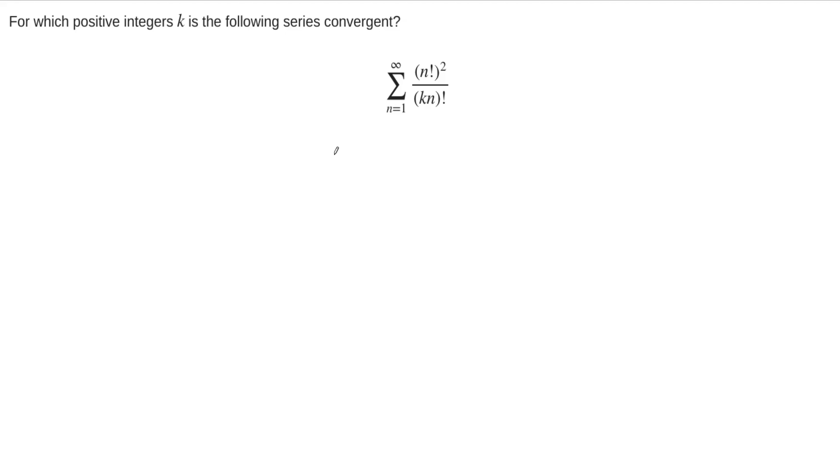In this example, we are asked to consider this series: n factorial squared over k times n quantity factorial. We're asked to find, if possible, for which positive integers is the following series convergent.